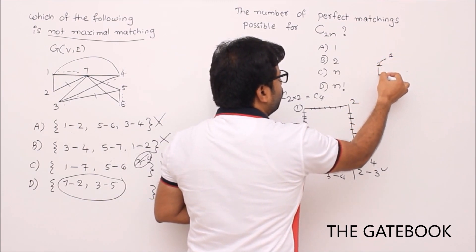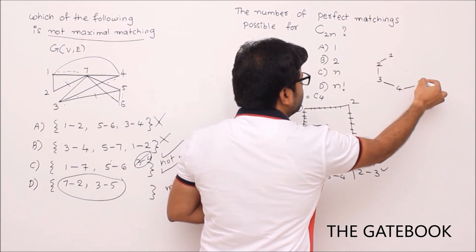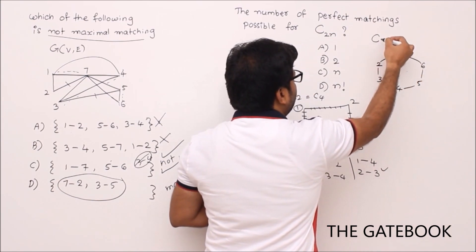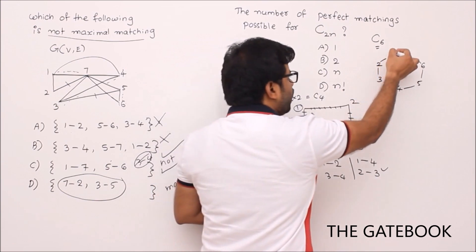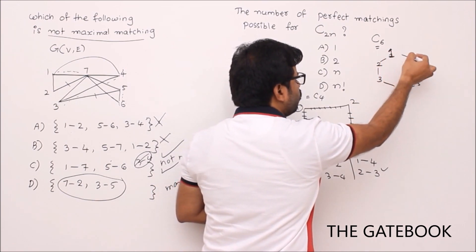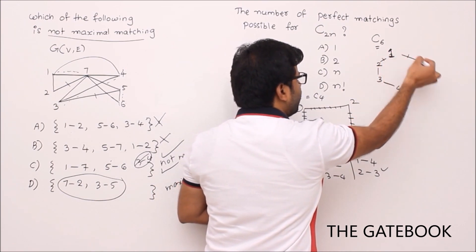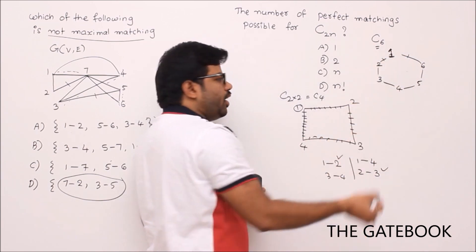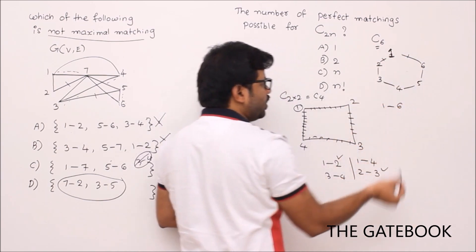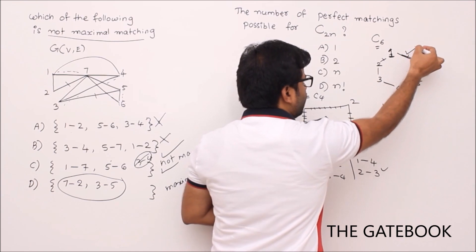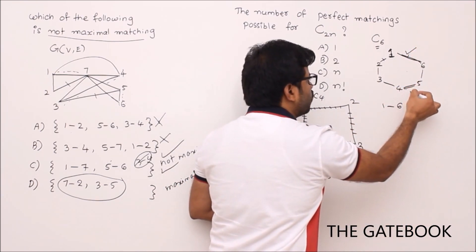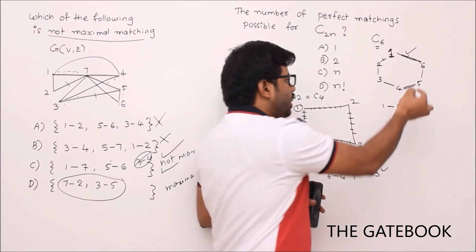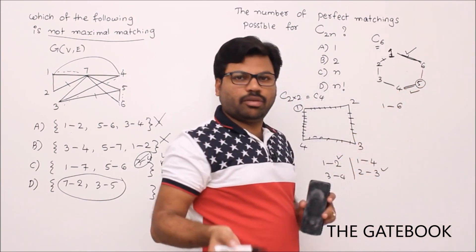Shall we get more number of perfect matchings? We'll see. Let me take cycle graph with 6 vertices, C_6. If you carefully observe, again 1 has only two possibilities: either 1 can take 6 or 1 can take 2. If 1 takes 6 in perfect matching, then automatically everything will be decided. If 1 takes 6, then 5 should take definitely 4. There is no option - can 5 take 6? No, impossible.